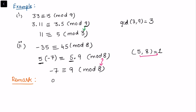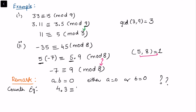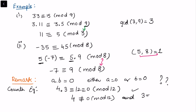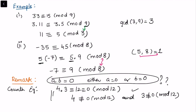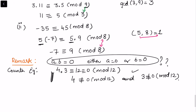There is another remark: in real numbers, if the product of two numbers a times b equals 0, then either a = 0 or b = 0. But such a conclusion may not be true in congruences. For example, 4 times 3 equals 12, which is congruent to 0 modulo 12. However, 4 is not congruent to 0 modulo 12, and 3 is also not congruent to 0 modulo 12. So we must be careful when applying this in congruences.